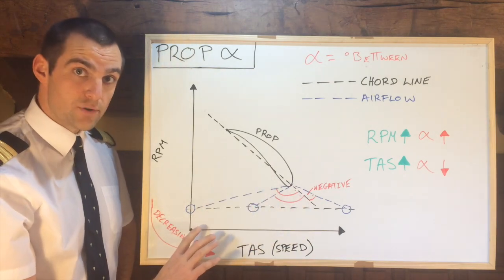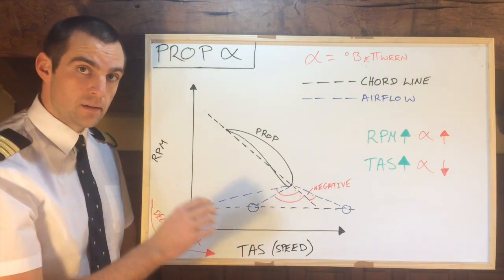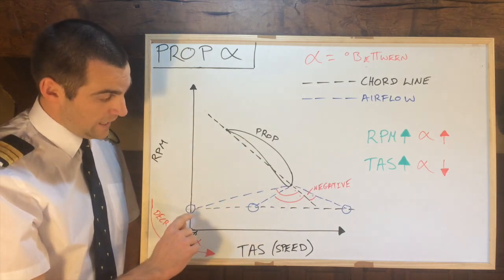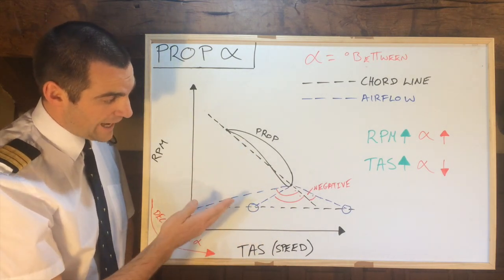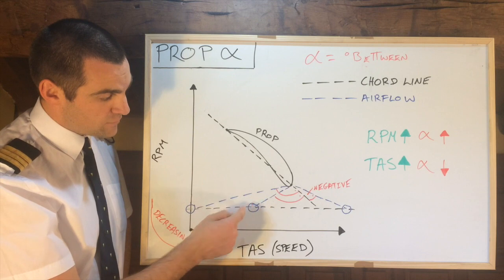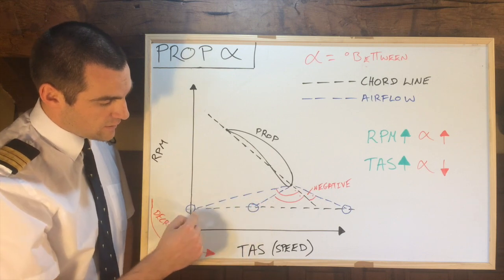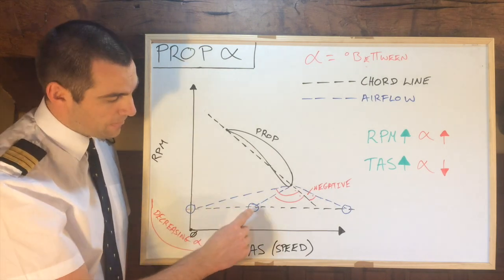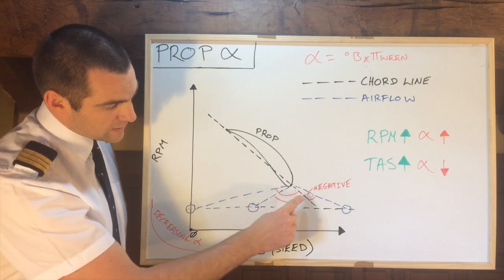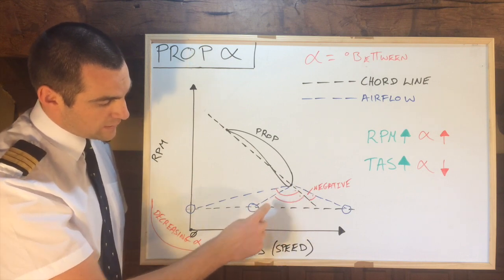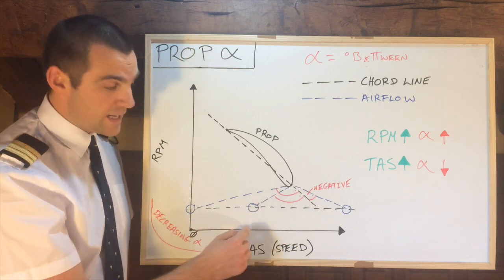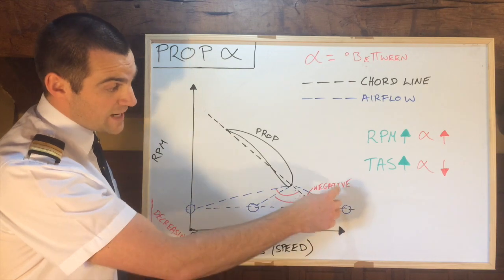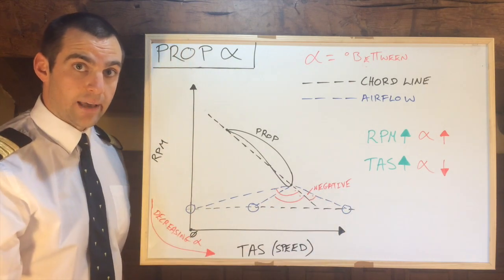If we start to increase our speed — this is of course for a fixed-pitch propeller — as we start to increase our speed, that angle there starts to reduce. So if we add some speed on at that same RPM, we can see that angle is slightly smaller, until eventually with an increase in speed we'll actually lead to a negative angle of attack.